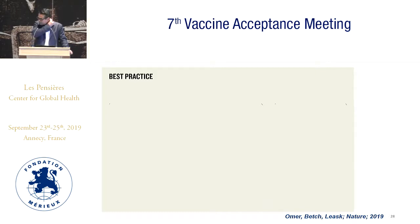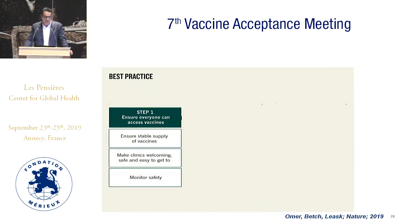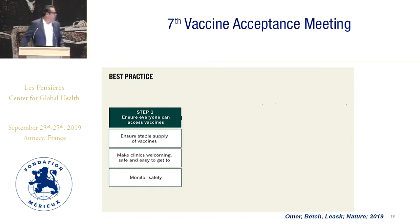I had the privilege of working with colleagues Cornelia Betsch and Julie Leask to outline some best practices. The first step is for states to ensure that access is not ignored, even in high-income settings. You can't have a system focused only on mandates without ensuring access — ensure stable supply of vaccines, make clinics welcoming, safe, and easy to get to, and monitor safety.